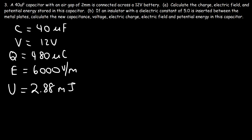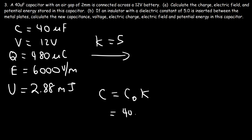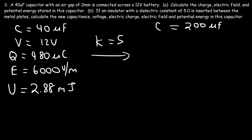Now let's move on to part B. If we add an insulator with a dielectric constant of 5, the new capacitance is the original times K: 40 microfarads × 5 = 200 microfarads. Because it's still in contact with the battery, the voltage stays the same at 12 volts. Initially the voltage would drop by a factor of 5 to 2.4 volts, but the battery recharges the capacitor back up to 12 volts. So in the end the voltage is still 12 volts.